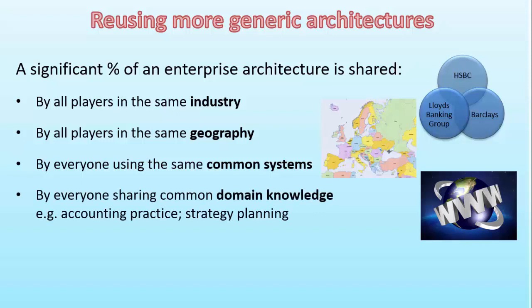We can also find that anyone working in the same domain area is going to share knowledge. One example of this is accounting practice — accounting practice is fairly similar worldwide, and the people dealing with accounts, setting up accounts, using accounts, and understanding accounts all share common domain knowledge. So there's a common architecture that would apply to accounting. Strategy planning would be another example where the basic processes and elements used in strategy planning are common domain knowledge. You find there are domain-specific architectures that cover areas like business planning and strategy planning.